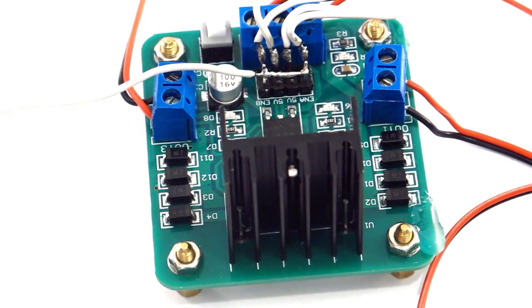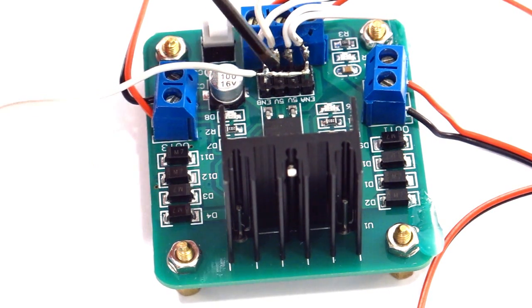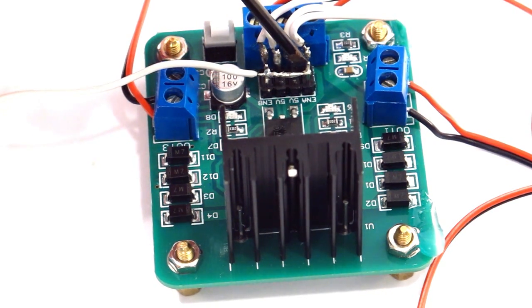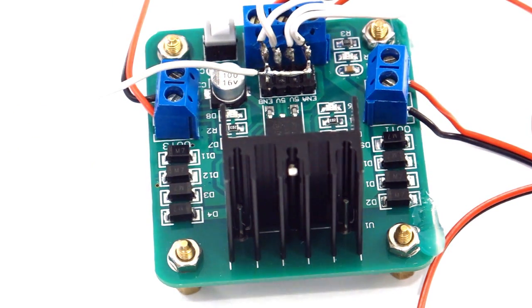So now you should have all of the input pins connected to signal wires that are connected to the EZB. And the enable pins are connected to one single white wire, which is going to connect to a pulse width modulation port on the EZB.